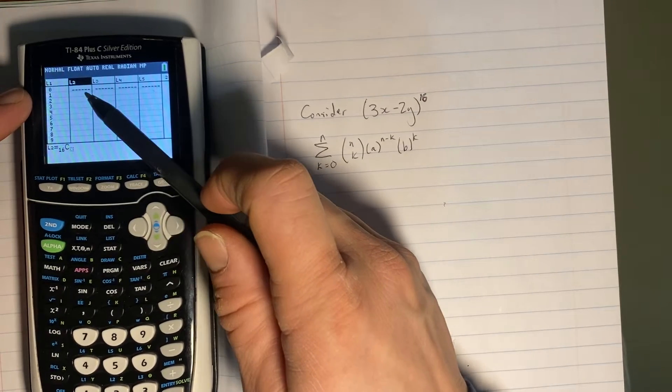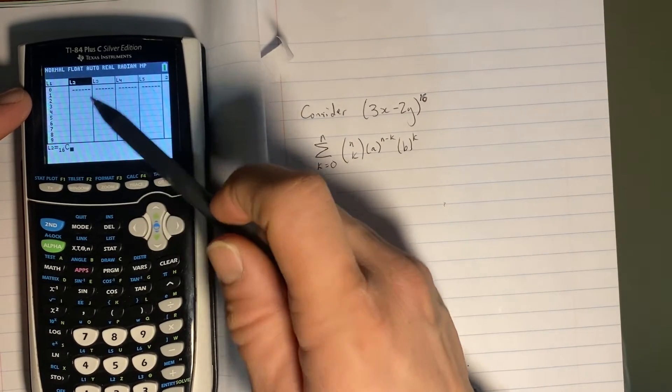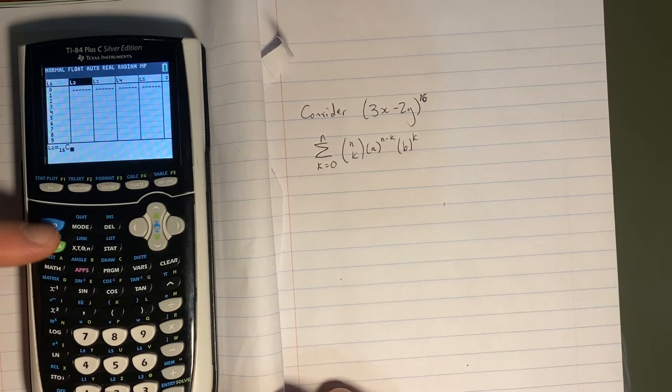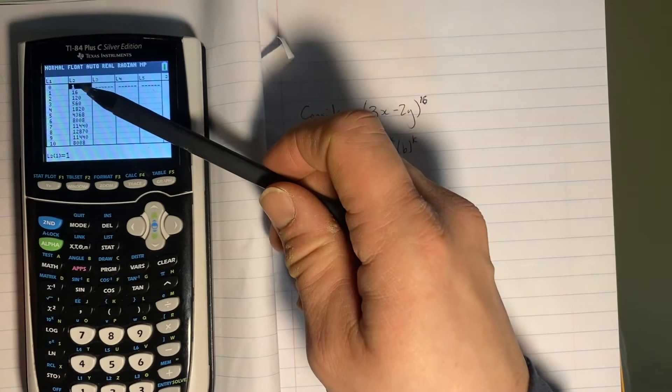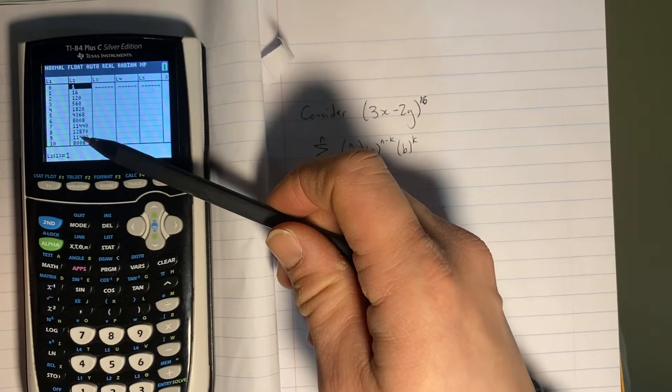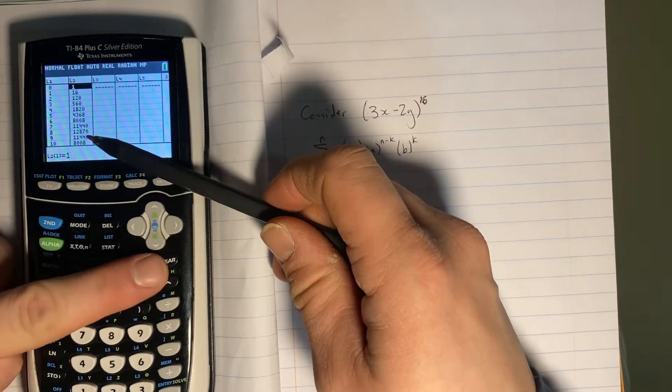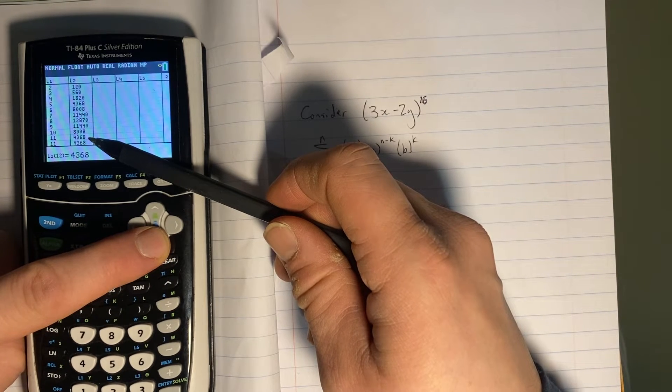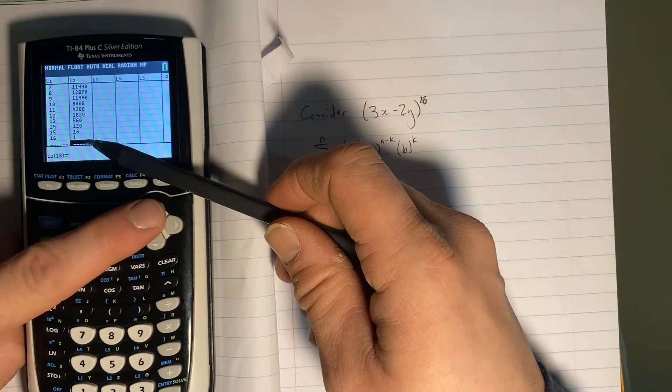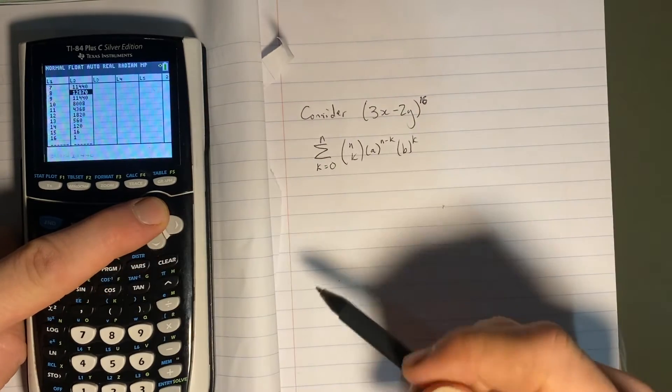So in the first column, I want 16 choose 0. In the second column, I want 16 choose 1. So in here, I'm going to press second function 1 to pull up L1. And when I hit enter, you'll see I have a list of all of the chooses of 16. They get quite large as we get to the middle, like I was talking about in class. But you can see it's symmetrical. And they cut back down to 1. So that's actually all of my coefficients. Well, at least all the part of my coefficients that come from this choose notation.